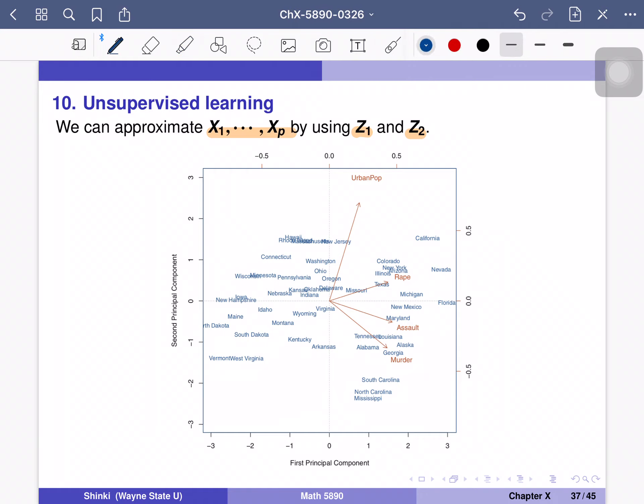So here, horizontal axis is z1 and vertical axis is z2. And these vectors are x1 to xp. So you can see that this murder is x1, and assault is x2, and rape is x3, and urban population is x4.